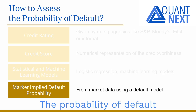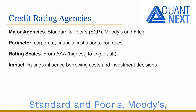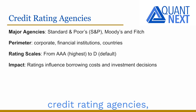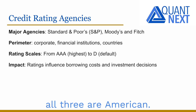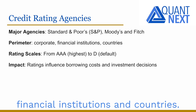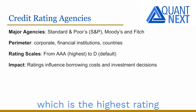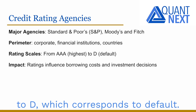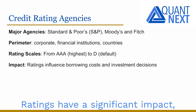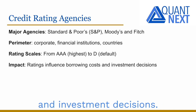The probability of default can also be implied from market data using a default model. Standard and Poor's, Moody's, and Fitch are the three major credit rating agencies. All three are American, and they mainly rate corporates, financial institutions, and countries. Ratings range from AAA, which is the highest rating, to D, which corresponds to default. Ratings have a significant impact, influencing borrowing costs and investment decisions.